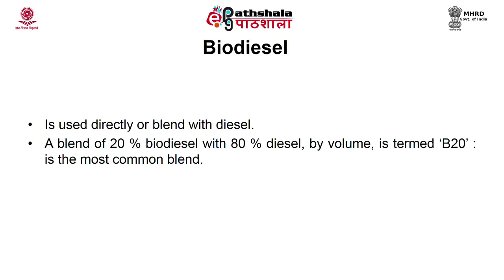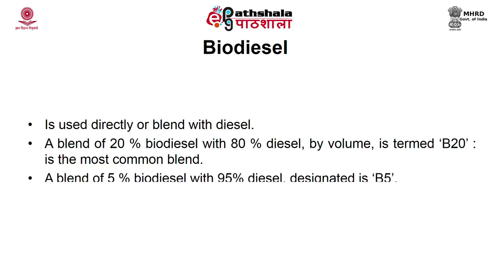B20 is the most common blend in most countries. A blend of 5% biodiesel with 95% diesel is designated as B5, and 100% biodiesel is designated as B100.